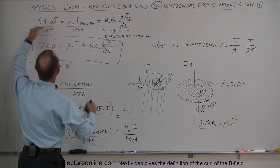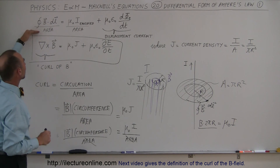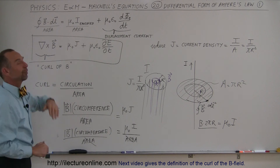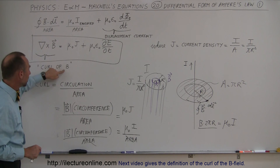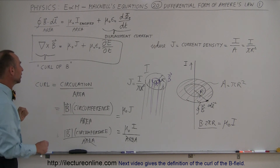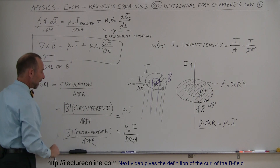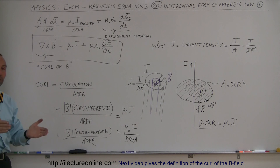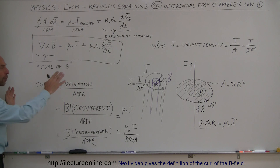The integral form of Ampere's law, divided by the area, gives you the differential form of Ampere's law — that's where most people don't see the connection. The curl by definition equals the circulation divided by the area, and the circulation is simply the B field integrated along its path — the strength of B times the circumference — divided by area. This gives what we call the differential form of Ampere's law, also known as the third of Maxwell's equations in differential form. Hopefully this sets the tone for understanding the differential form, and examples will follow in later videos.